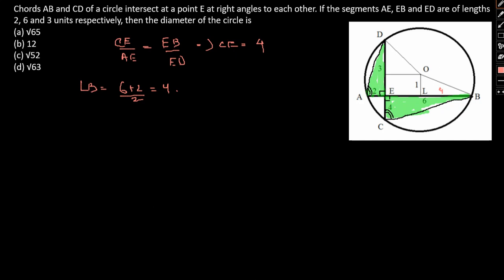OL will be equal to DC by 2 minus 3, that is 3 plus 4 by 2 minus 3, that is 3.5 minus 3, that is 0.5 or 1 by 2. OL, this is 1 by 2, OL.